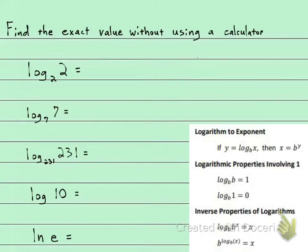We're going to evaluate some examples using this property right here. What it says is that if your bases are the same, then it's going to equal 1. So log base 2 of 2 is 1, the log base 7 of 7 is 1, log base 231 of 231, you guessed it, it is 1.